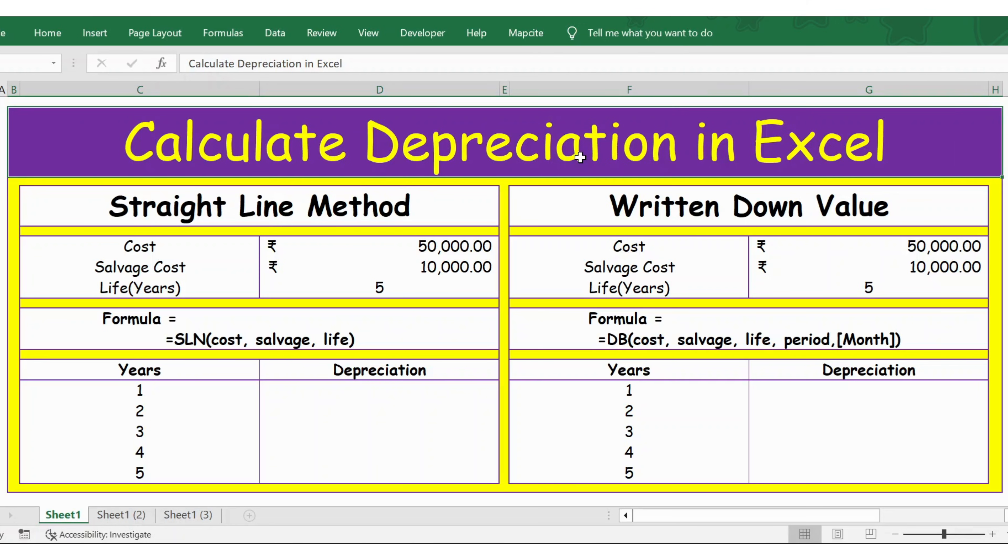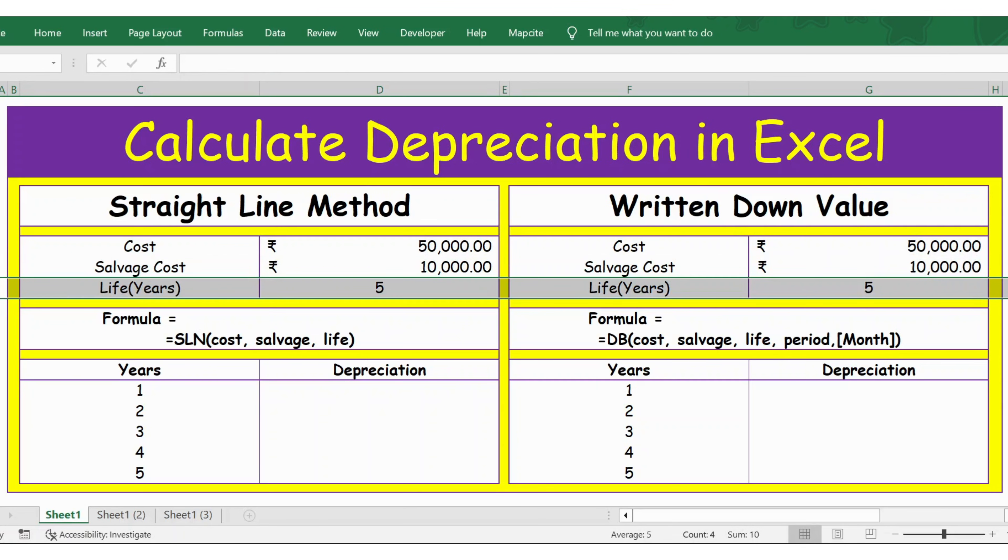Hello everyone, welcome back. In this video, let's see how to calculate depreciation in Excel for straight line method and written down value method. You have a detail of cost in row number seven, and then you have salvage cost and the life. So the formula is here for the straight line method. Let me apply the formula here to calculate the depreciation for total five years.